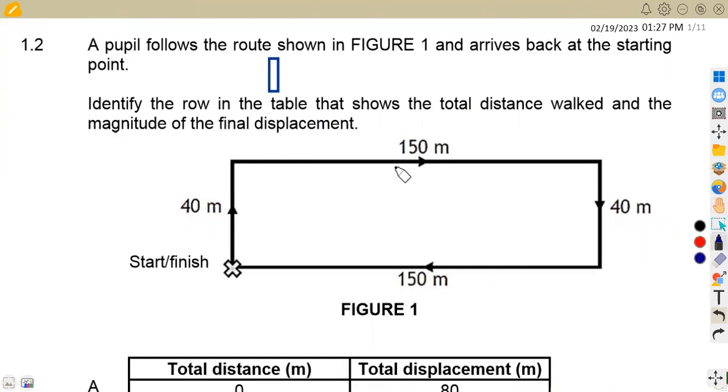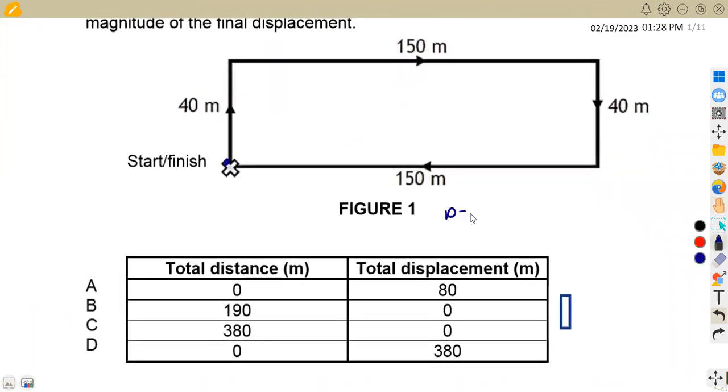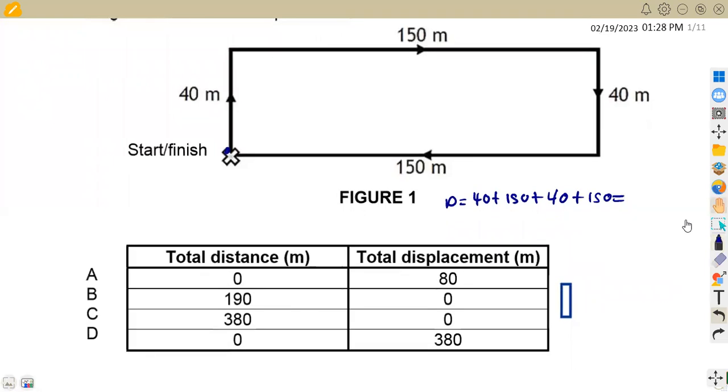Remember that total distance, you add everything from the starting point to the finishing point. This is going to be 40 plus 150. So our distance is going to be 40 plus 150 plus this 40 plus this 150. If we add properly, this is 80, so this is 380 meters.